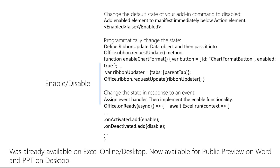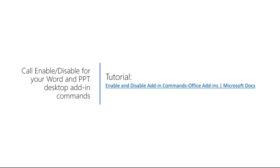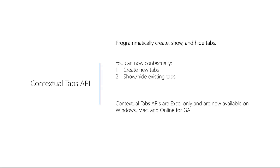This feature was already available on Excel Online and Desktop and is now going to be available for public preview on Word and PowerPoint on Desktop. If you'd like a tutorial, there's a link to documentation with step-by-step instructions for enable/disable on Word and PowerPoint. I'll now hand it over to Abhita, who will talk briefly about the contextual tabs API.